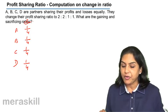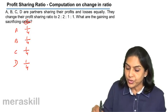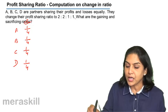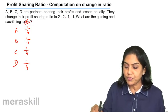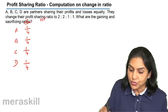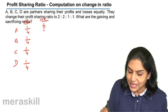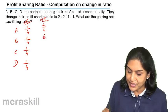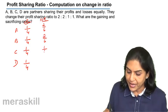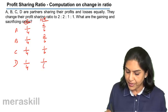They change their profit sharing ratio to 2:2:1:1. Total 2 plus 2, 4, 5 and 6. So what is the new ratio now? Denominator of 6. It is 2 by 6, 2 by 6, 1 by 6, and 1 by 6.